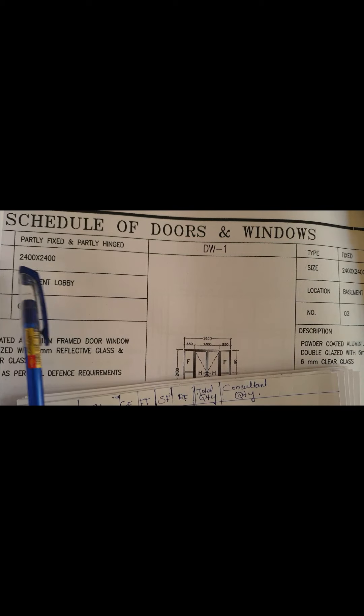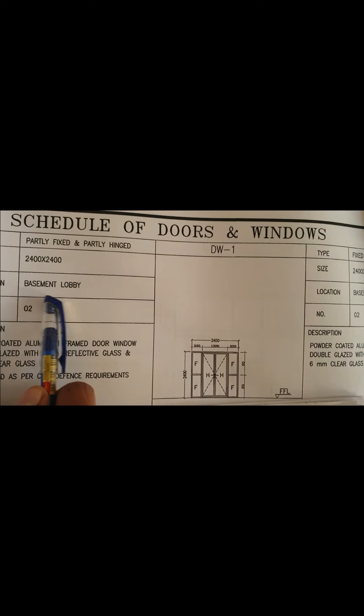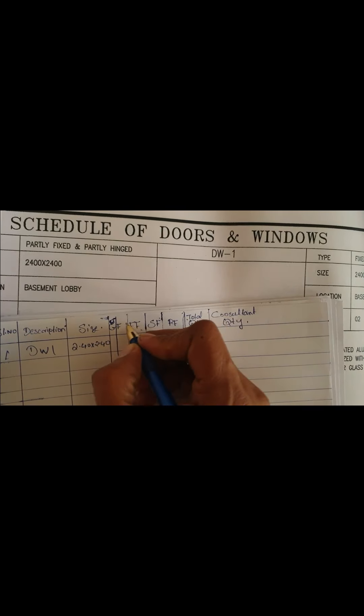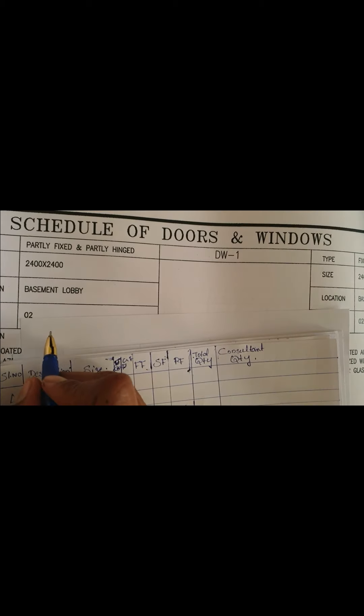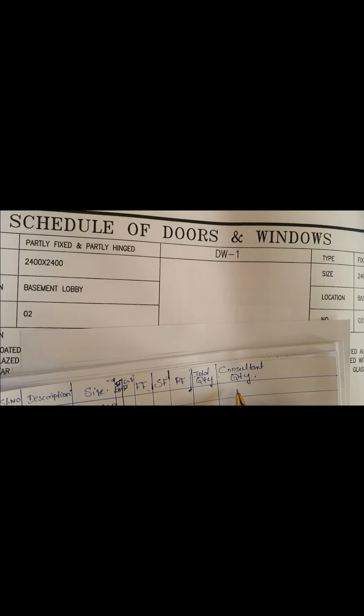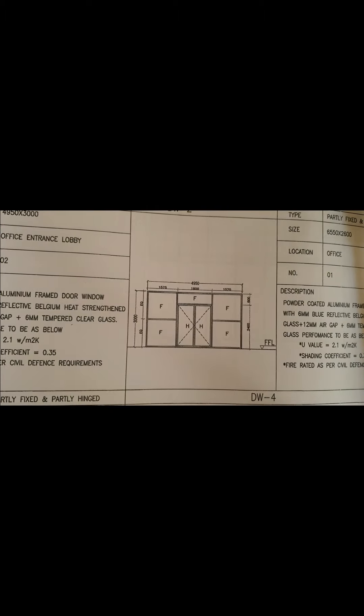For DW1, first we write the serial number, then DW1. Then the size — 2.4 by 2.4 metres. We have to check from the drawing also to see if it is correct. This one is 2.4 by 2.4 metres — correct. This item is provided in the basement floor, so we enter a basement floor column. In the basement floor, two numbers are given in the consultant's schedule — we write consultant quantity as two numbers.